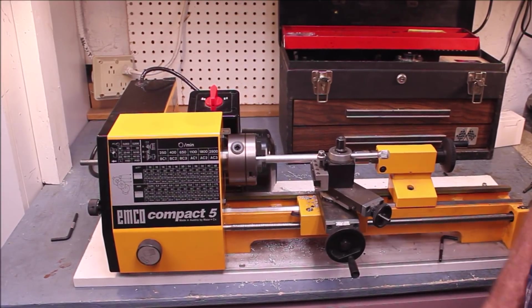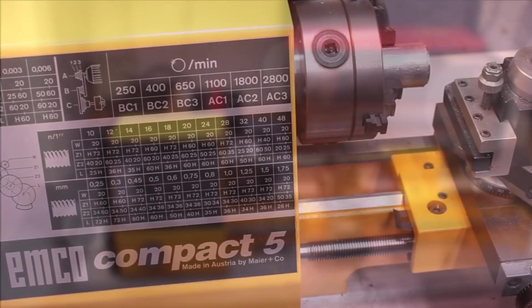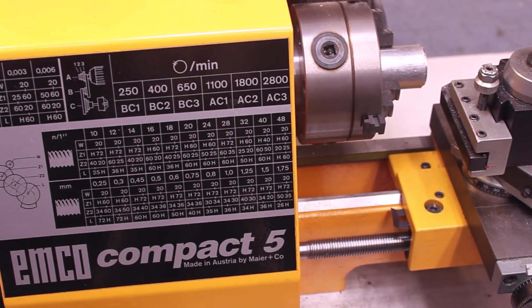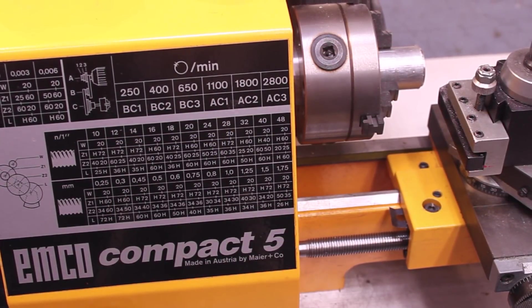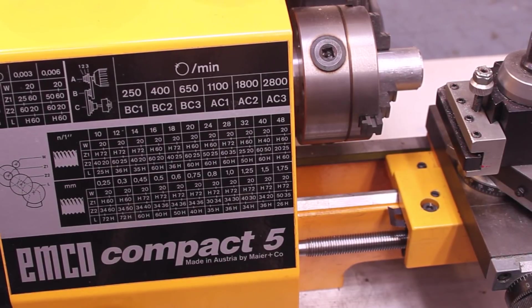I have a special surprise for you. The Emco Compact 5 came in both a metric and an inch version. This happens to be the inch version.